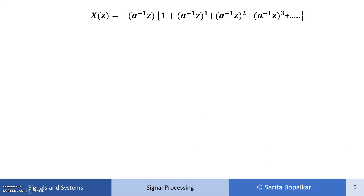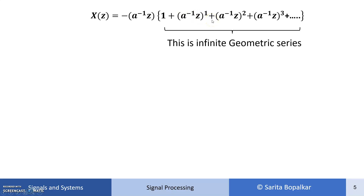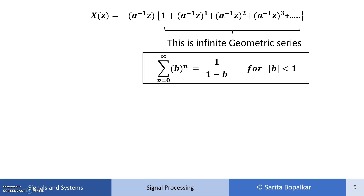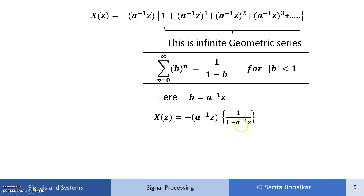We know the solution for an infinite geometric series: the summation where n varies from 0 to infinity of b raised to n equals 1 upon 1 minus b, where mod b is less than 1. Here, b is a raised to minus 1 times Z. So this series is nothing but 1 upon 1 minus a raised to minus 1 times Z, and the condition for convergence is that mod of a raised to minus 1 times Z is less than 1.